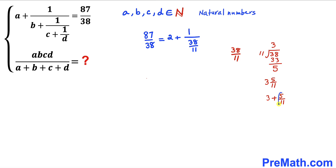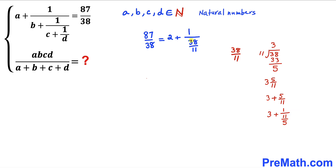Now let's focus on the fraction 5 divided by 11 — we can tweak this. So 5 divided by 11 can be written as 1 divided by (11 divided by 5). Therefore this whole expression becomes 3 plus 1 divided by (11 divided by 5). So 38 divided by 11 has been transformed into 3 plus 1 divided by (11 divided by 5).